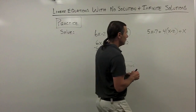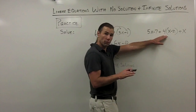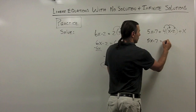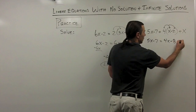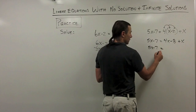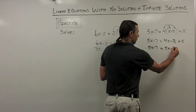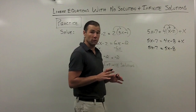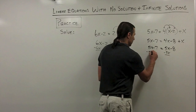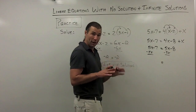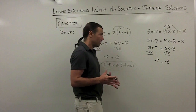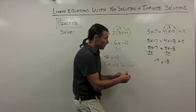For the second equation, I distribute the 4, giving me 5x minus 7 equals 4x minus 8 plus x. Combining like terms on the right side gives 5x minus 8. Now I have variable terms on both sides, so I subtract 5x from each side. The variables drop out entirely, and I'm left with an untrue statement: negative 7 equals negative 8. That tells me there's no solution to this equation.